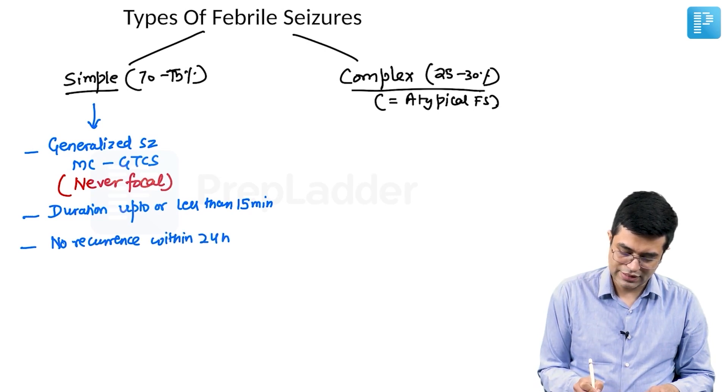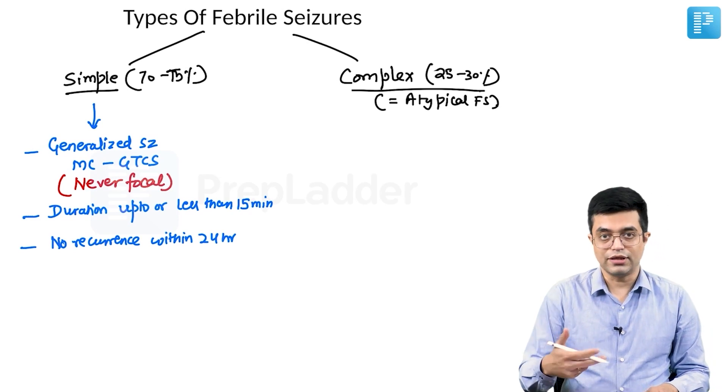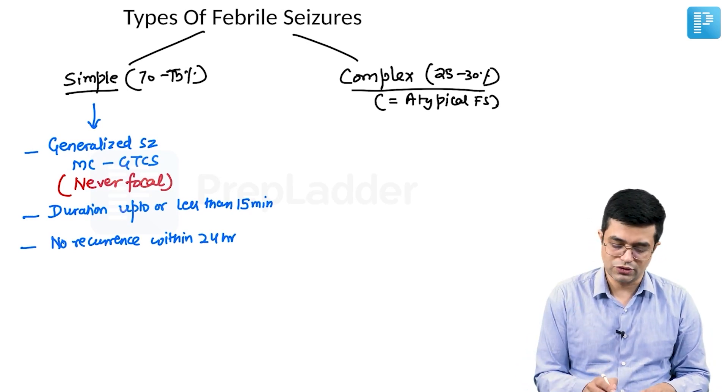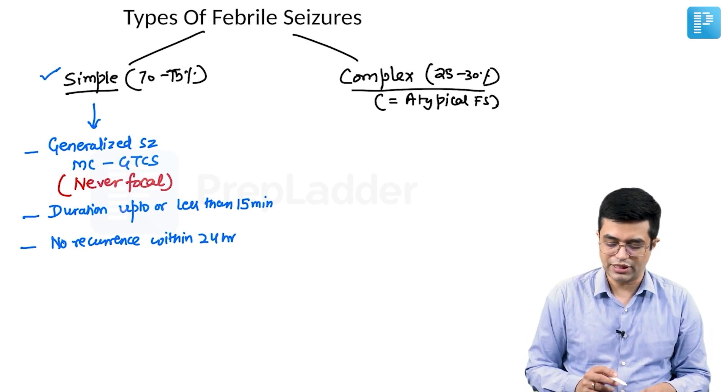Once a seizure has happened, another seizure will not happen within the next 24 hours — these are called simple febrile seizures.